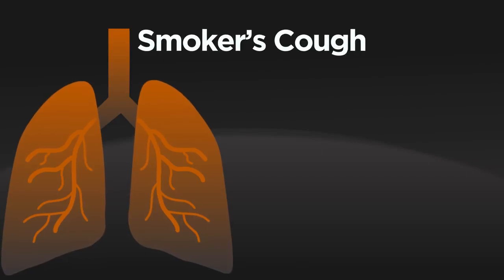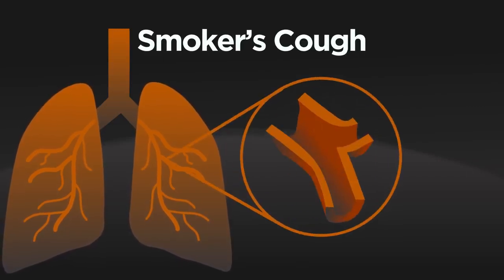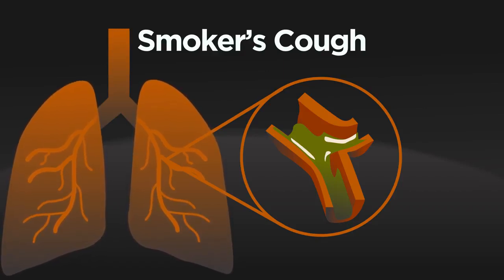Smoking also causes the cilia in the lungs to become irritated and produce excess mucus. So that's the lungs, and we saw earlier that nicotine and carbon monoxide make the heart work much harder.